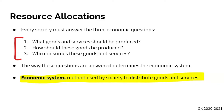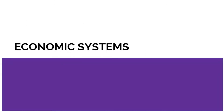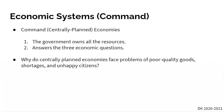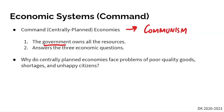Now that we know the three economic questions, let's go into the three different economic systems. The first one is a command economy, otherwise known as communism. What makes this unique is that the answer to all three economic questions — what should be produced, how should they be produced, and who consumes it — is the government. The government owns all the resources and answers all three economic questions. It's pretty simple: the government does everything.